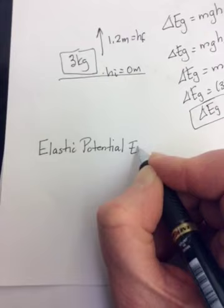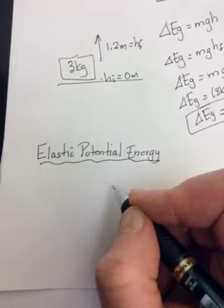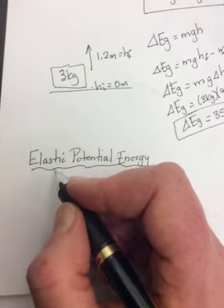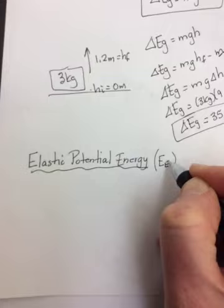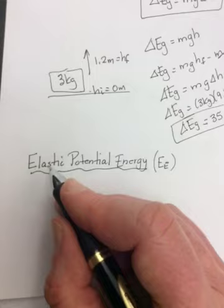If you've ever stretched a spring, and then let it go, what you've done is created elastic potential energy. Elastic potential energy is energy in things that will stretch or compress. Its symbol is capital E with an E for elastic.